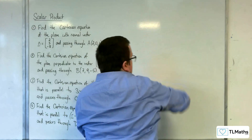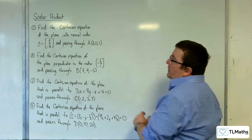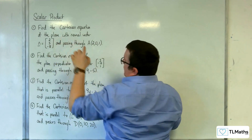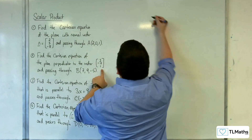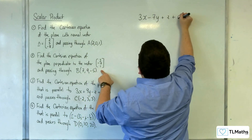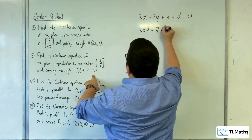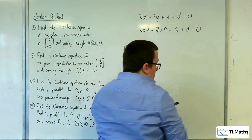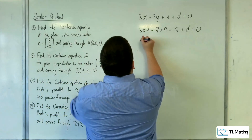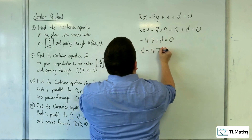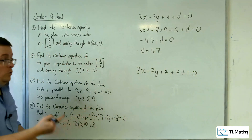Number 2: find the Cartesian equation of the plane perpendicular to the vector (3, -7, 1) and passing through B with coordinates (7, 9, -5). Where number 1 said 'normal vector', this one says 'perpendicular to the vector' — that is my normal vector, because it is perpendicular to the plane. So we know it's of the form 3x minus 7y plus z plus d equals 0. Substituting the coordinates of B in: 3×7 minus 7×9 minus 5 plus d equals 0, giving minus 47 plus d equals 0, so d equals 47. Therefore 3x minus 7y plus z plus 47 equals 0.